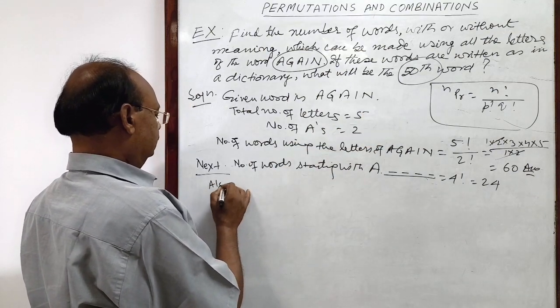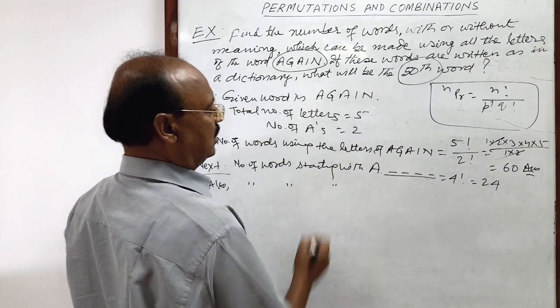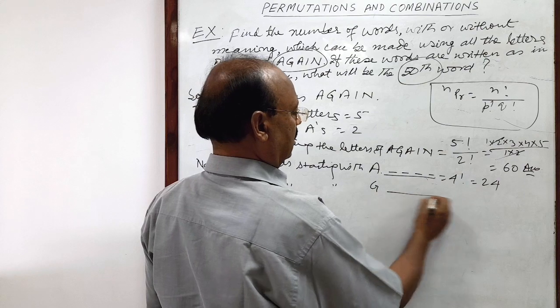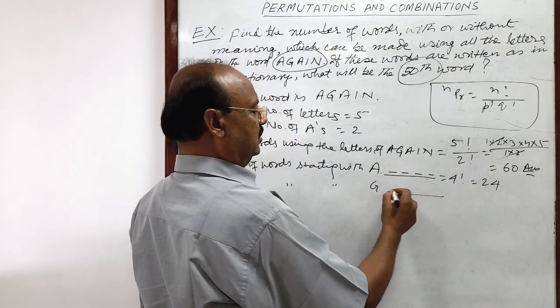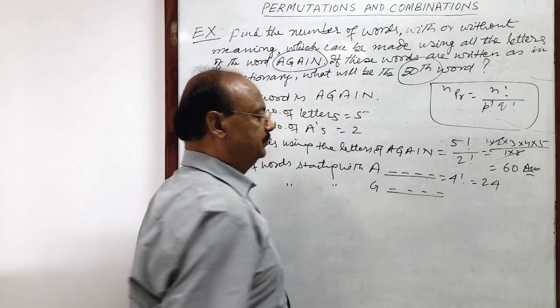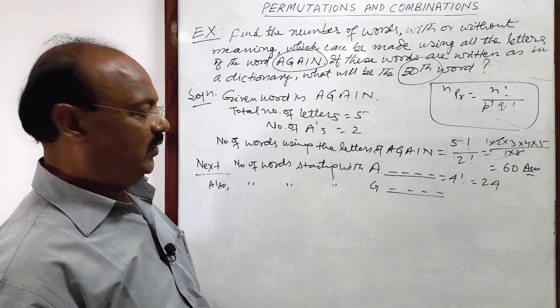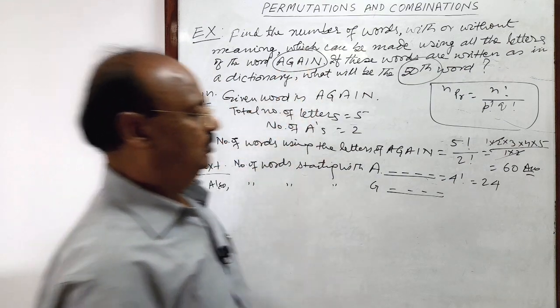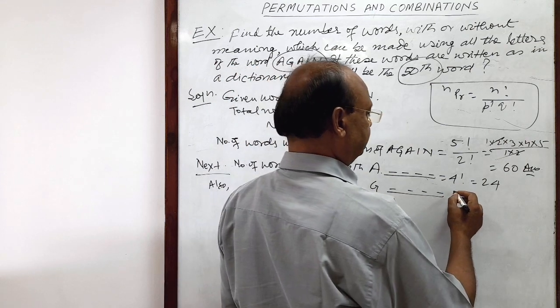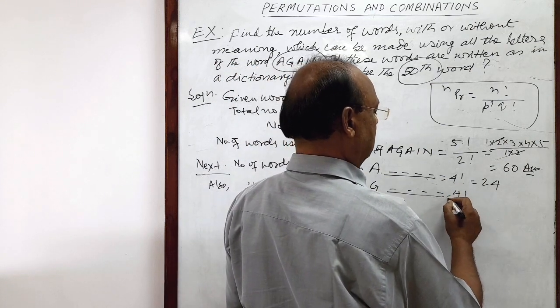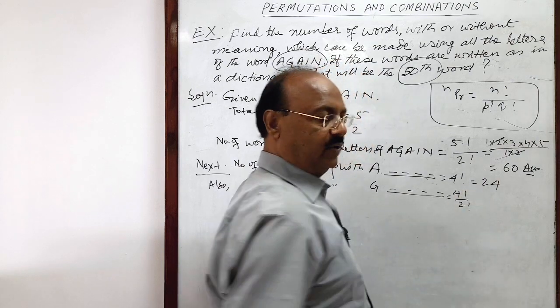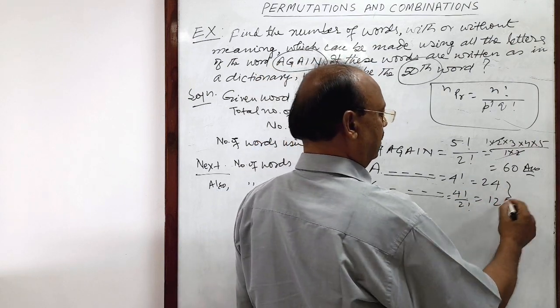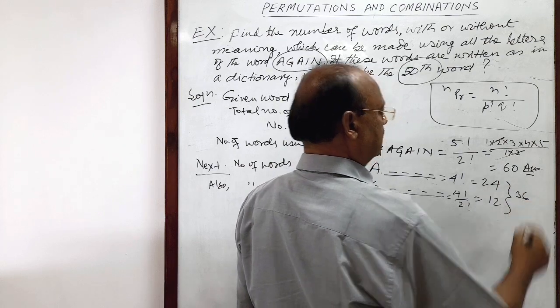Also, number of words starting with G. Then 4 letters will be here, 1, 2, 3, 4. But A is 2 times here. This will be 4 factorial upon 2 factorial. This is equal to 12. So total we have got here 36 words.